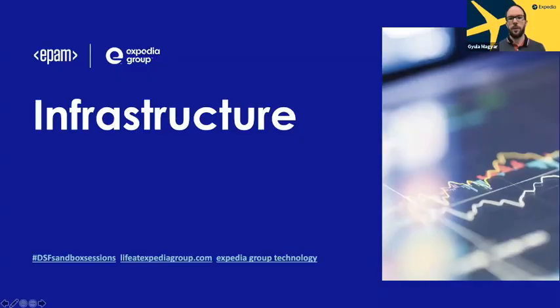My name is Gyula and I work at EPAM Systems in Hungary. I've been with Expedia for a long time, and most recently I've been focusing on working with Apache Flink and Kafka, besides Java backend development. Today I'd like to talk about how image bandits work under the hood.